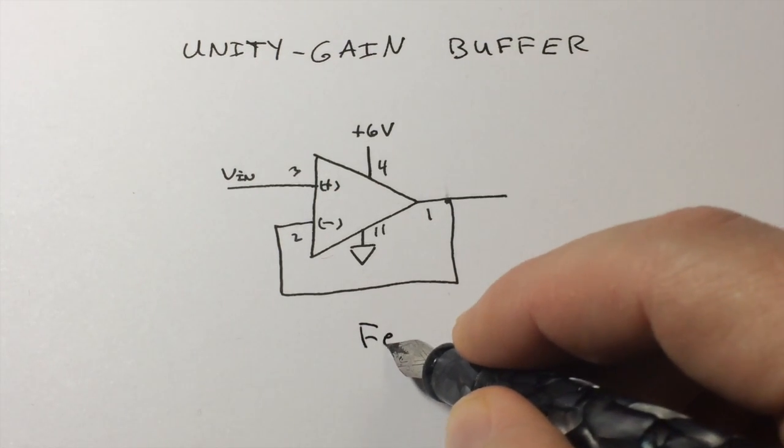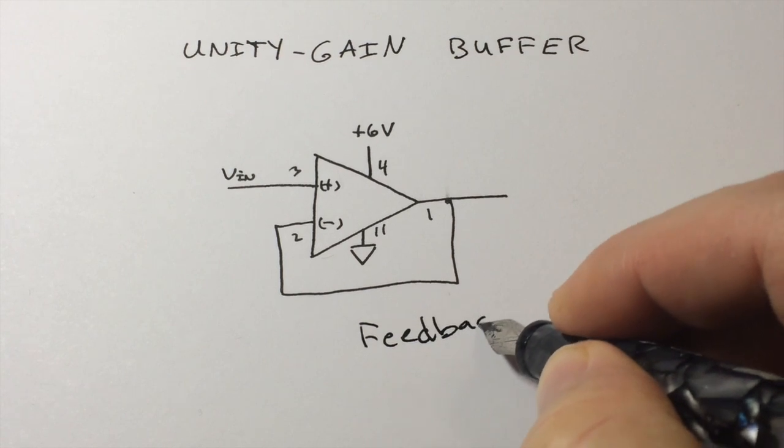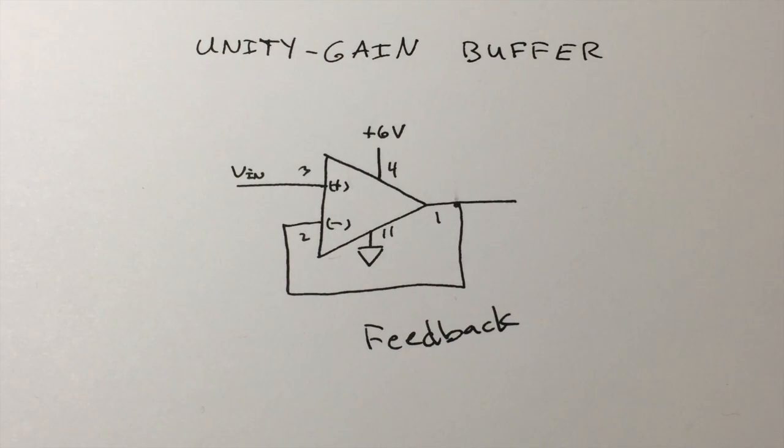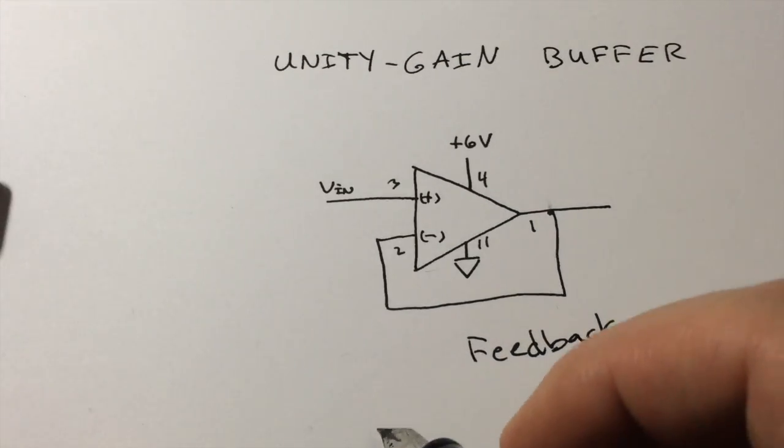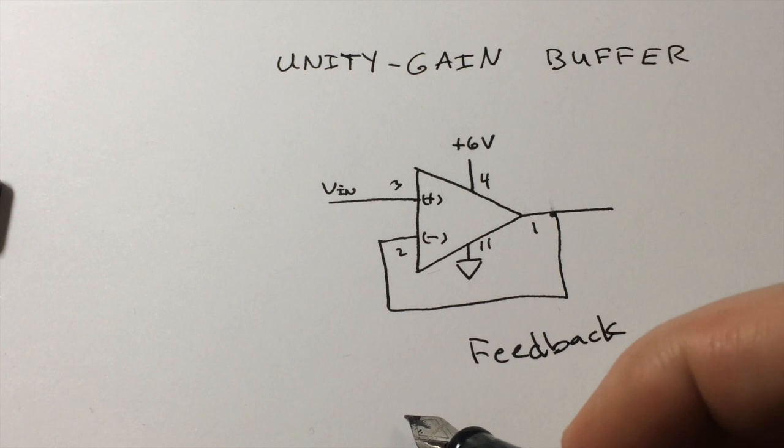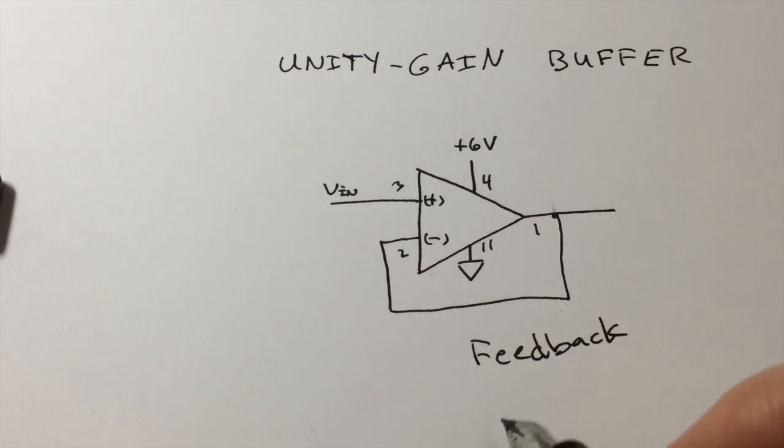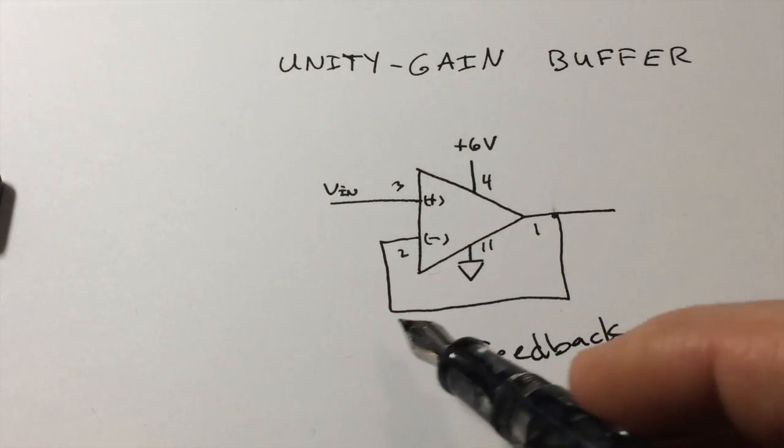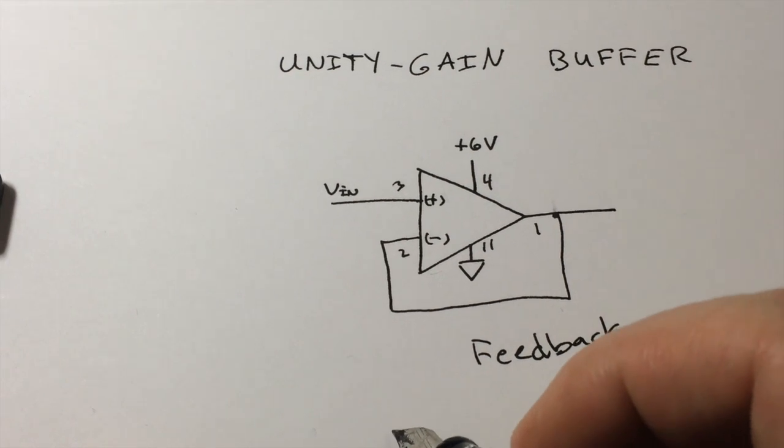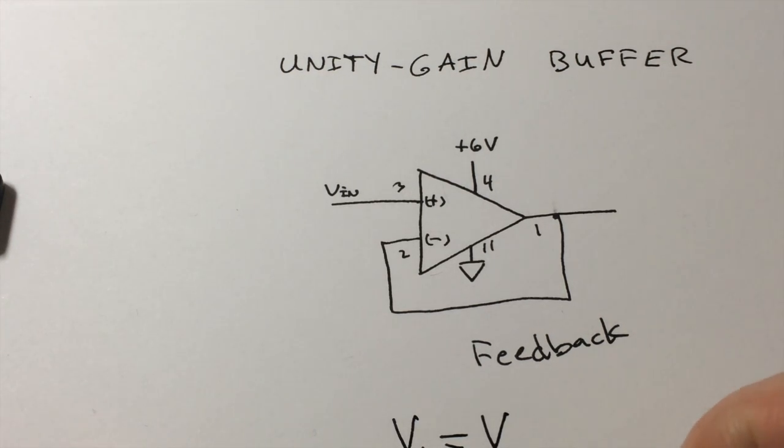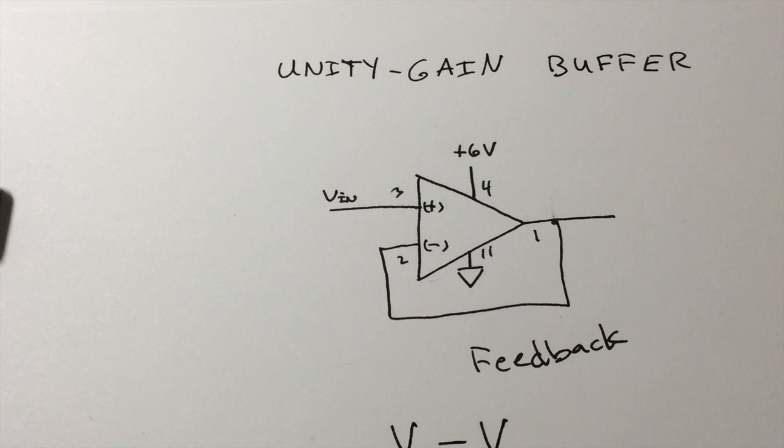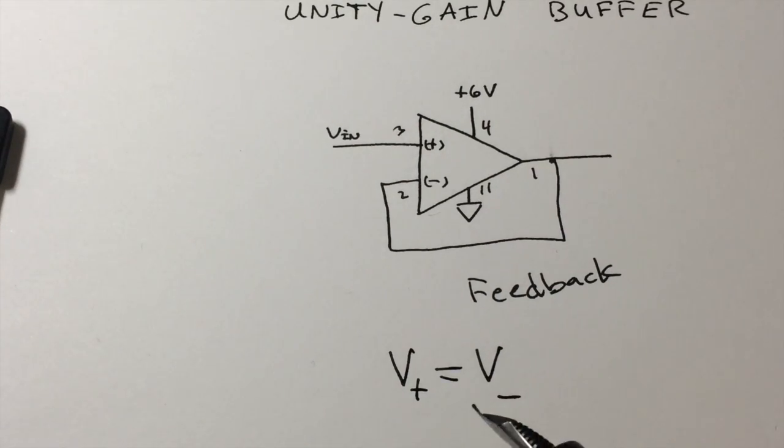So we have this idea of feedback. This allows us to talk about the most important principle when we're trying to figure out what's going to happen with this circuit. Anytime you have feedback, the op-amp is going to try to do whatever it can and respond to the circuit in order to get the voltage on the inverting pin to be the same as the voltage on the non-inverting pin.